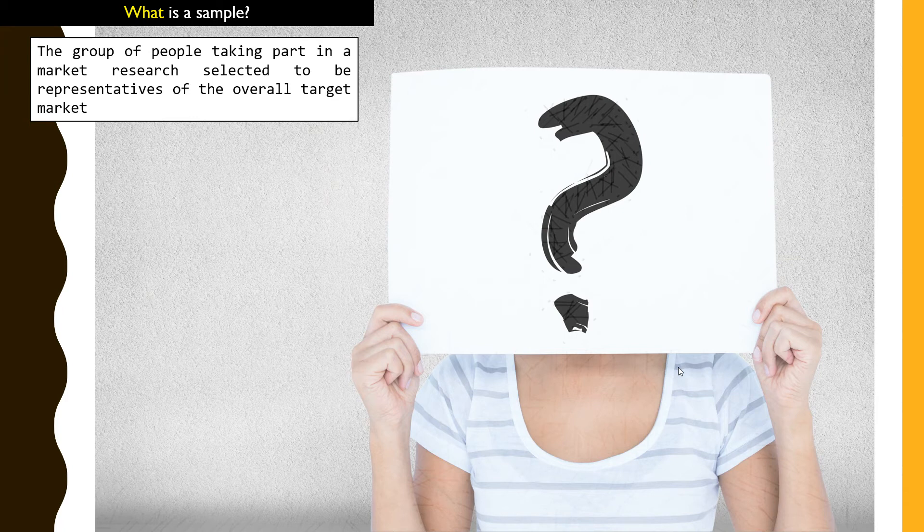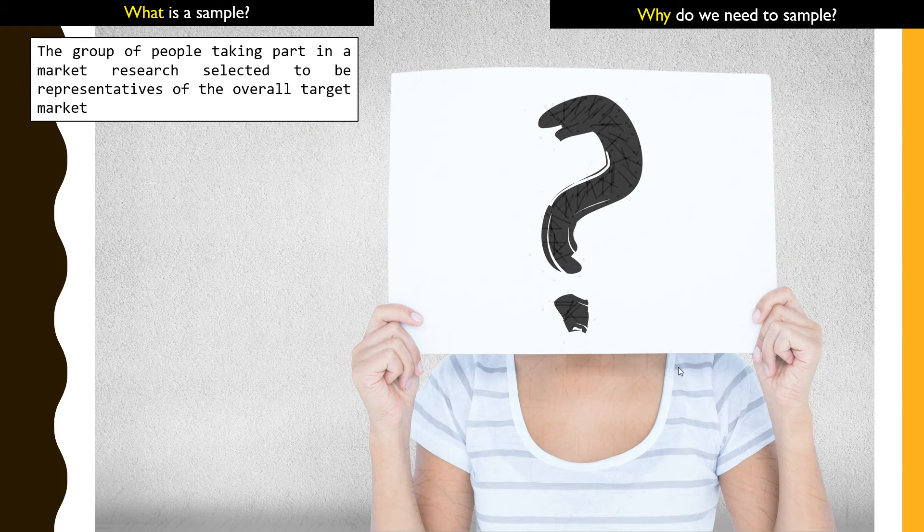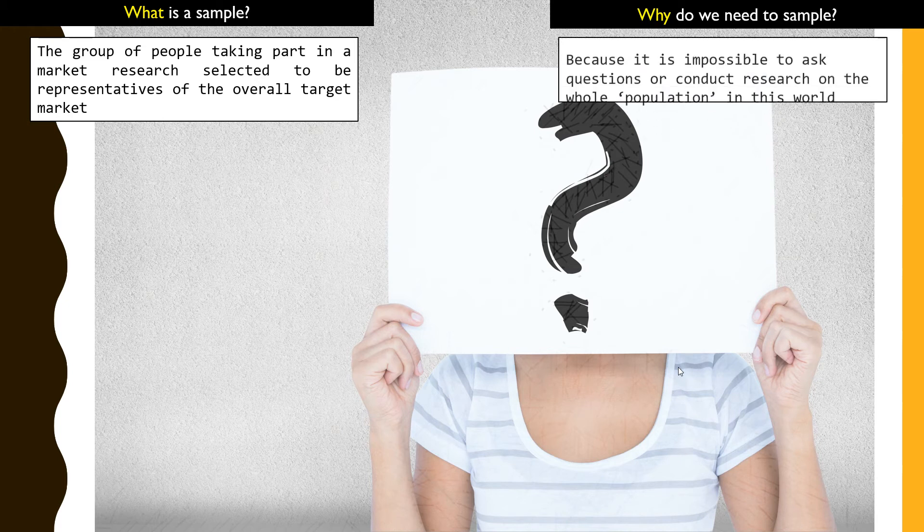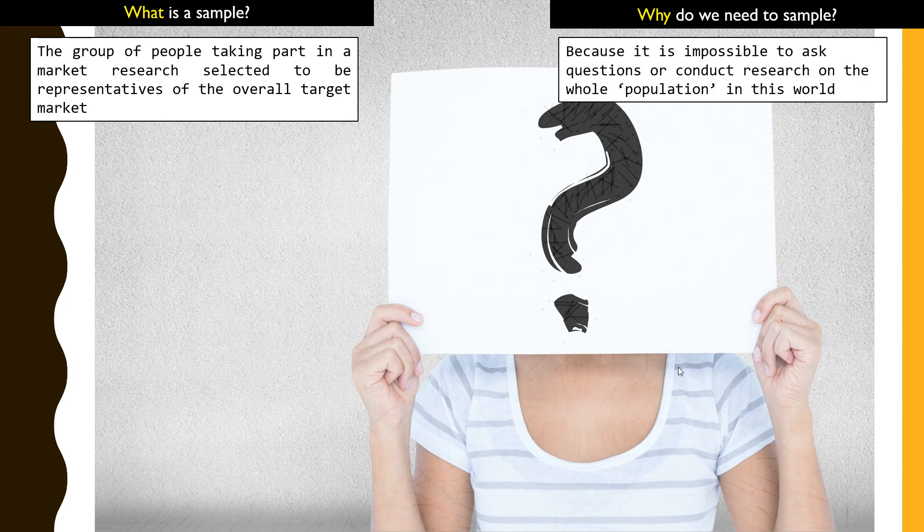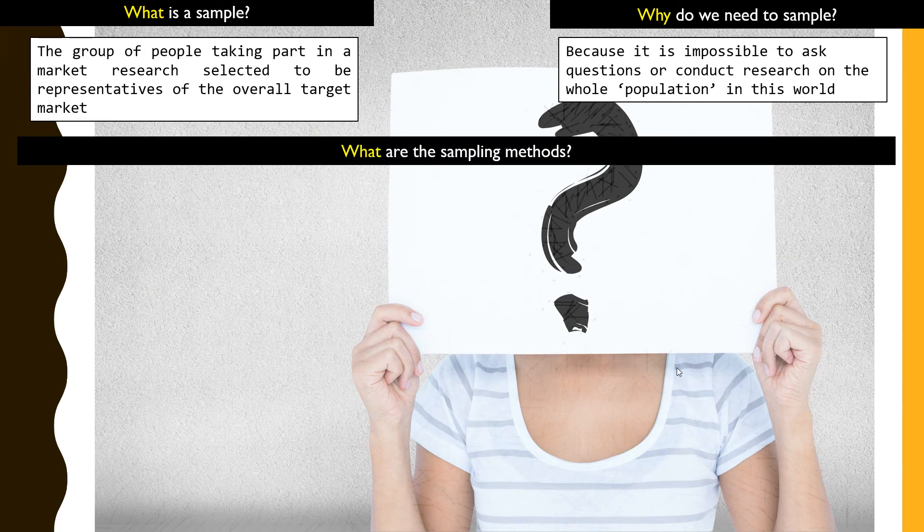Why do we need to have a sample? Because it's impossible to gather everyone in this world to partake in this market research or the overall population in this country or world. Because of that, it's better and easier to gather a small sample size. To gather a sample, there are methods to do that to make sure that the people or types of people participating in the research have the variety that the company is looking for.